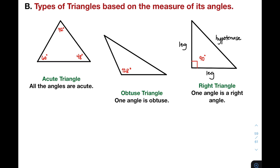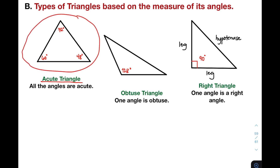So let's start with the first one. We have here acute triangle. Why do we call it an acute triangle? Because all the angles are acute, meaning that the measurement of the angles is greater than 0 but less than 90. As you can see in our illustration, we have here three angles: 48 degrees, 60 degrees, and 72 degrees. If all the angles are acute, therefore that is an example of an acute triangle. I hope na natutunan niyo yan.